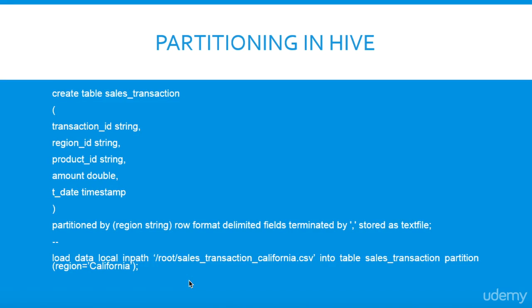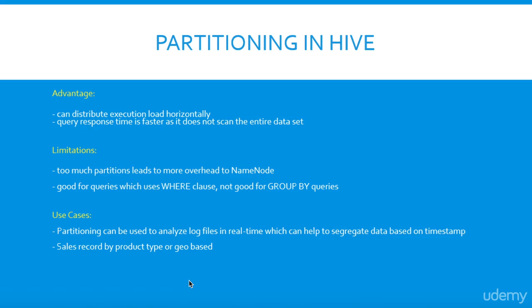Now let's look at some advantages, limitations and use cases of partitioning. Partitioning can distribute execution load horizontally, and query response time is faster as it does not scan the entire dataset. Limitations: too many partitions lead to more overhead on the name node. Partitioning is good for queries that use a WHERE clause, but not good for queries that use GROUP BY. Use cases include analyzing log files in real time, segregating data based on timestamp, sales records by product type, or geo-based partitioning.